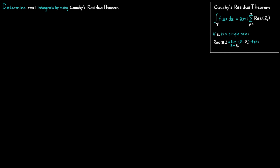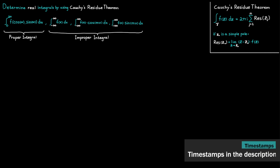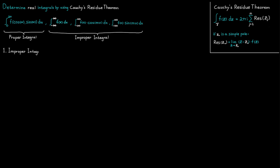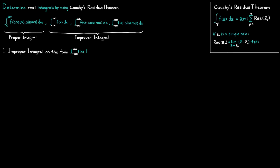Last time we talked about how we could use Cauchy's residue theorem to determine real integrals written on this form. Today we are going to continue this discussion by doing three different forms of integrals. All of them are improper integrals, and note that the function f in all of them is going to be a rational function.